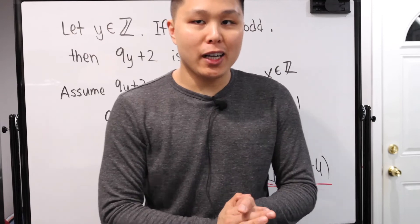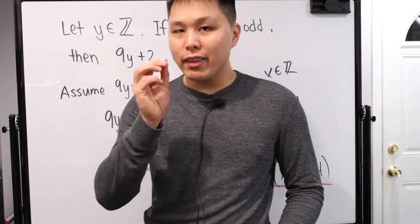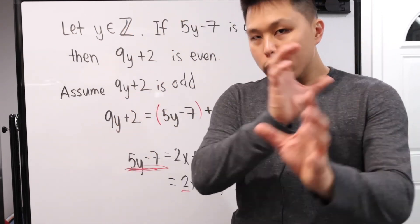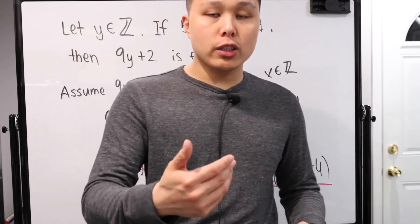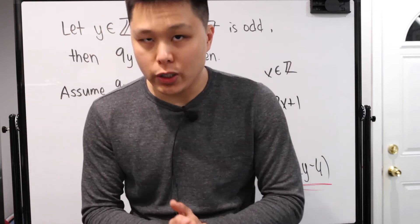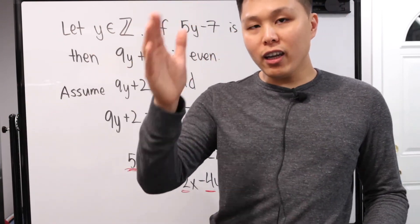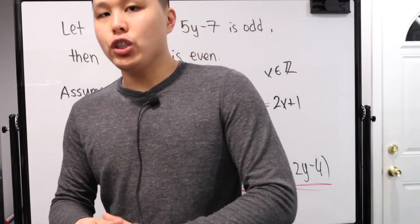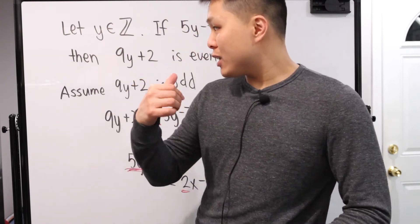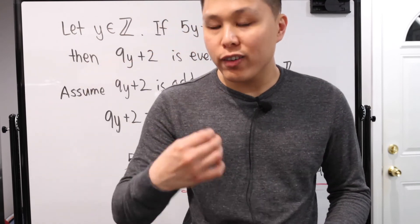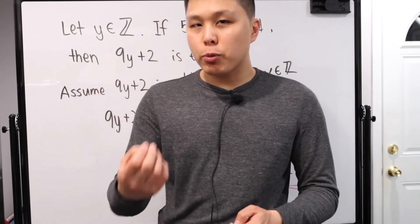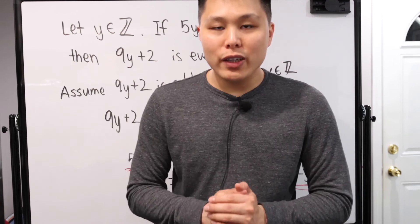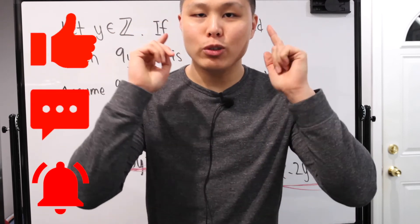So there you have it — proof by contrapositive. Don't get it mixed up with proof by contradiction; they are very different. Proof by contrapositive switches and negates both the condition and result: instead of proving 'if condition then result,' you prove 'if not result then not condition.' Hopefully these techniques are a little more clear now. There's no one way to prove something as long as you can get your mathematical reasoning and argument across. Thank you for watching — please like, comment, and subscribe. I'll see you in the next video.